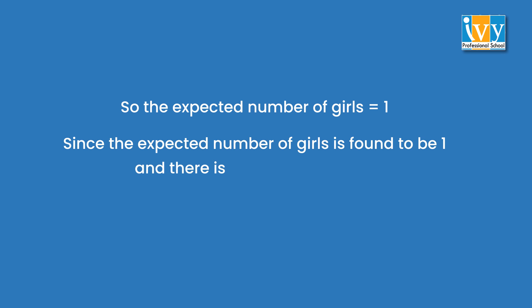So the expected number of girls is equal to 1. Since the expected number of girls is found to be 1 and there is always a baby boy, the anticipated ratio of boy to girl is 50 is to 50.